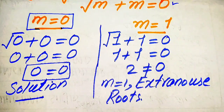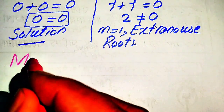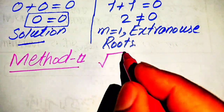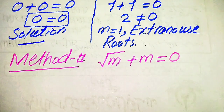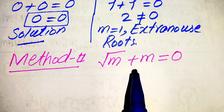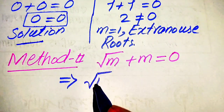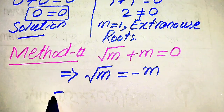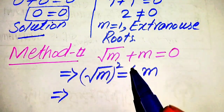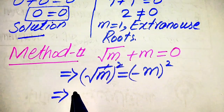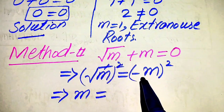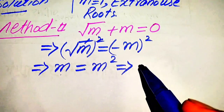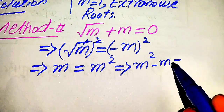Now we solve this problem using a second method. The given equation is square root of m plus m equals 0. We move m to the right-hand side, giving square root of m equals negative m. To remove the square root sign, we square both sides. The left side becomes m, and the right side, negative m squared, becomes positive m squared. So we have m equals m squared.